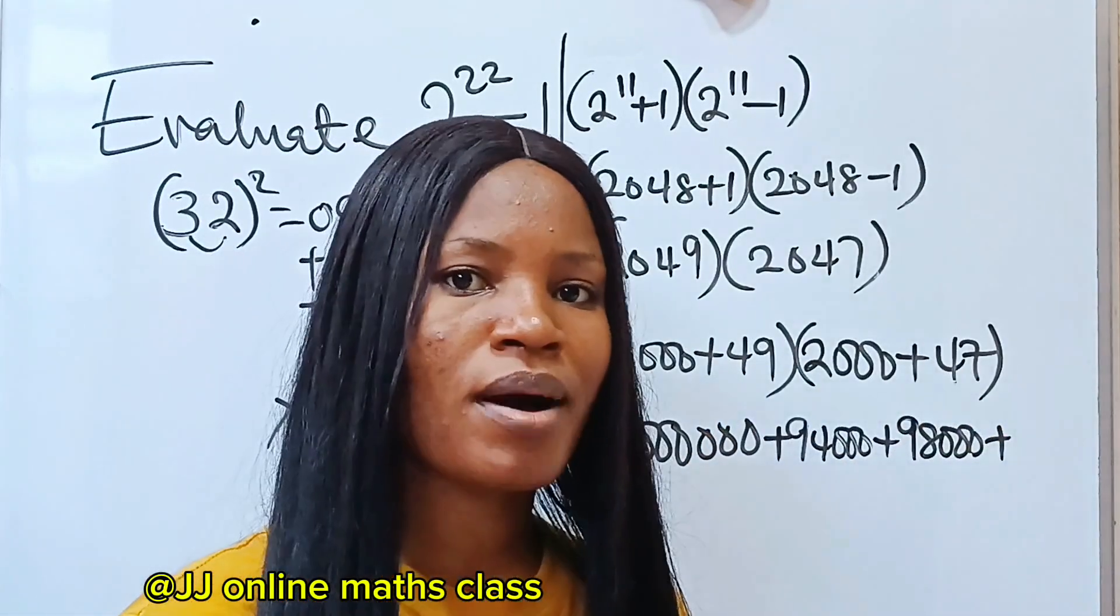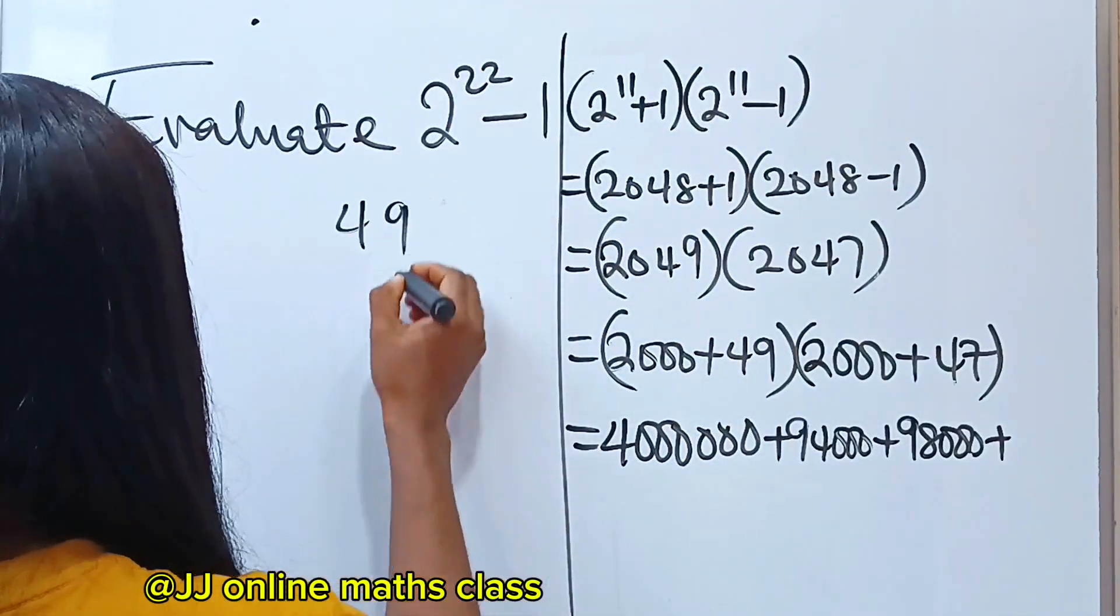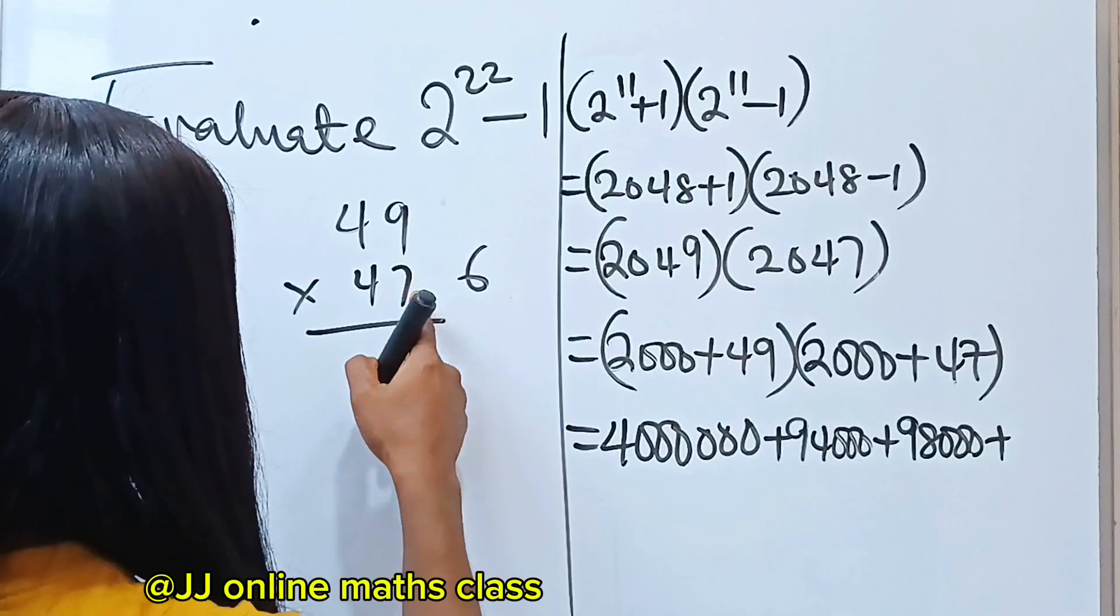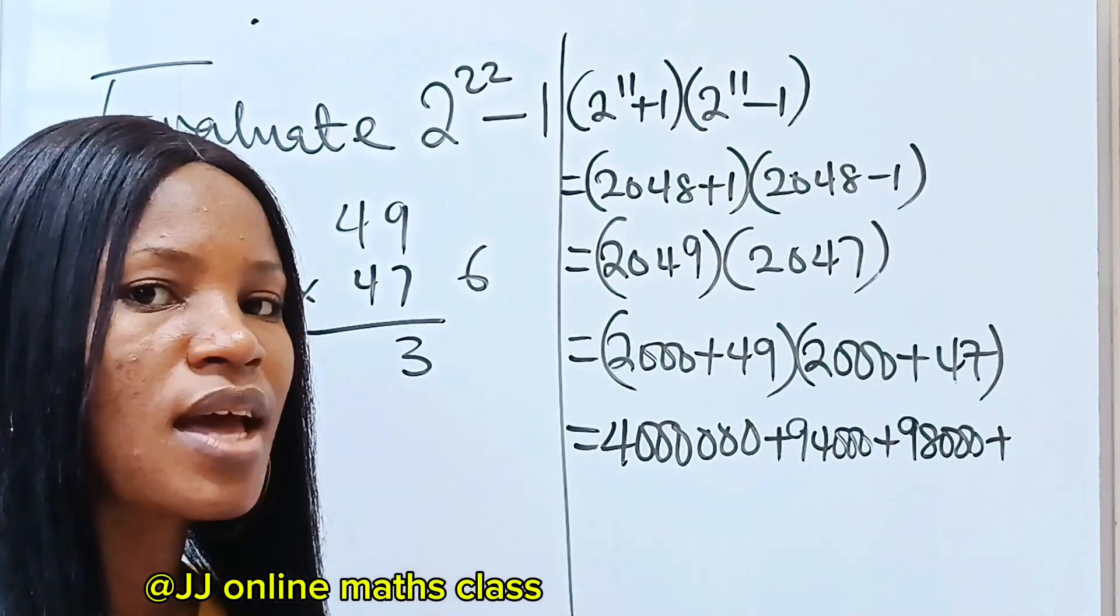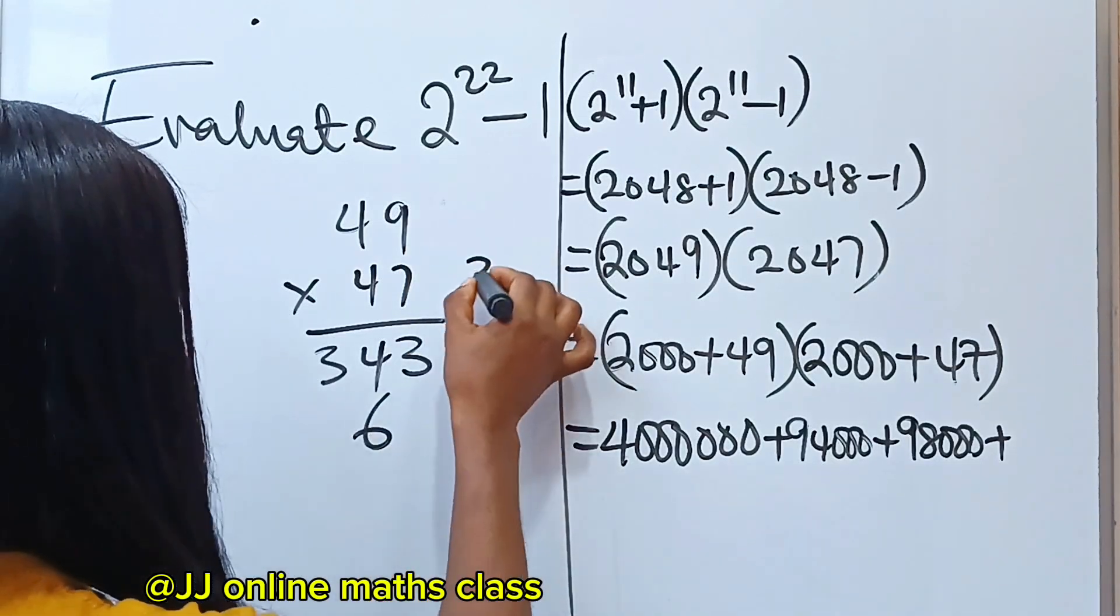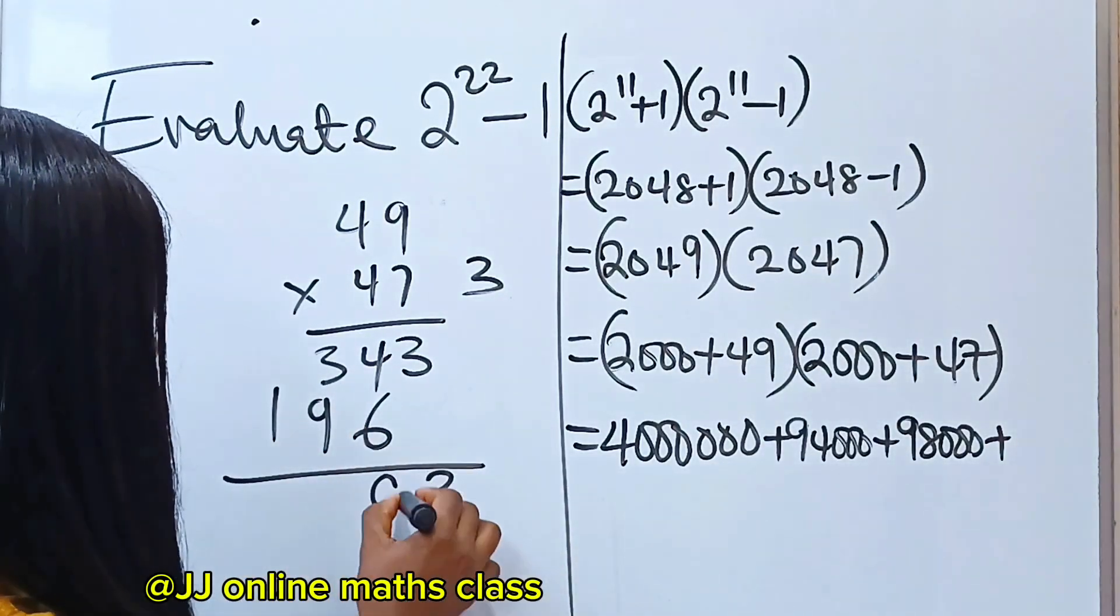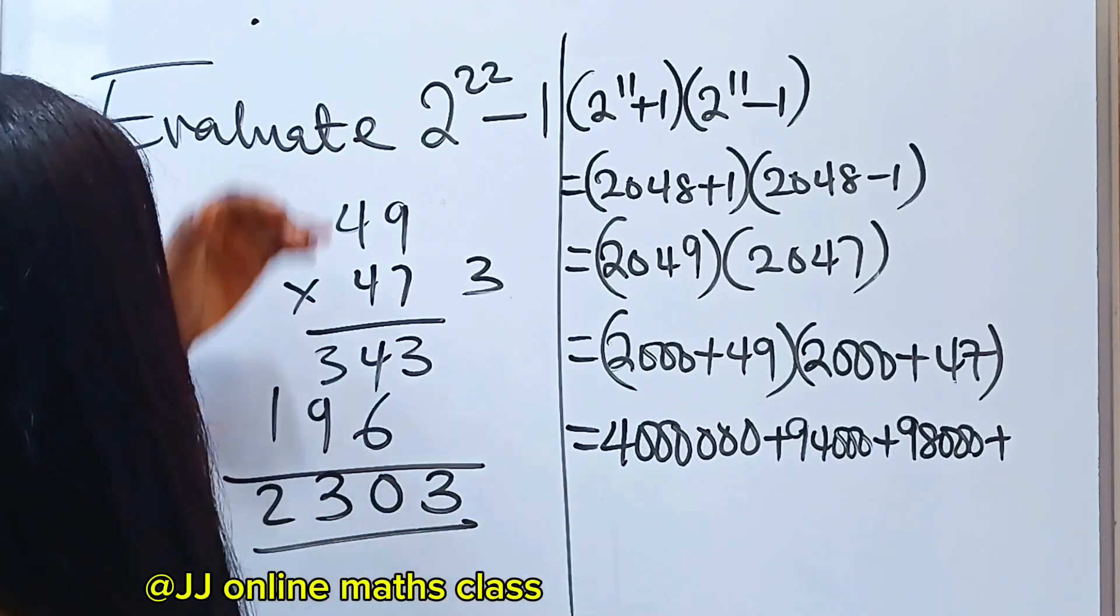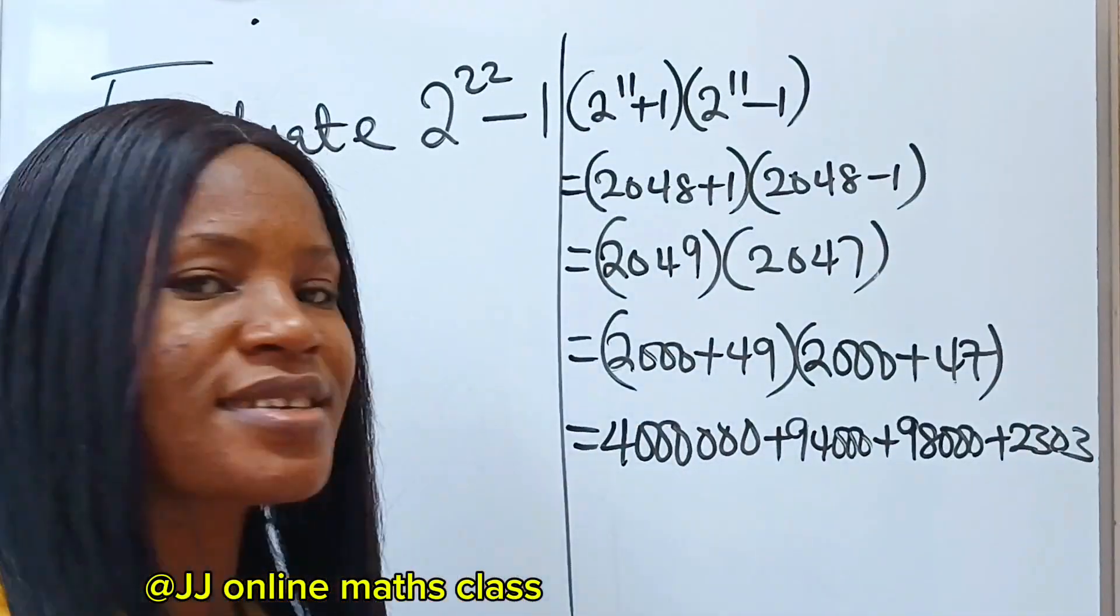This is where you just have to do your math. So let's do that. 49 times 47. 9 times 7 will give us 63. We write 3 and carry 6. 7 times 4 will give us 28. 28 plus 6 will give us 34. Now we have 4 times 9 is 36. We write 6 and carry 3. 4 times 4 is 16 plus 3 is 19. So we add. We have 3. We have 10 carry 1. We have 13 carry 1. We have 2. So it's 2303. So 2303 for the last number. Perfect.